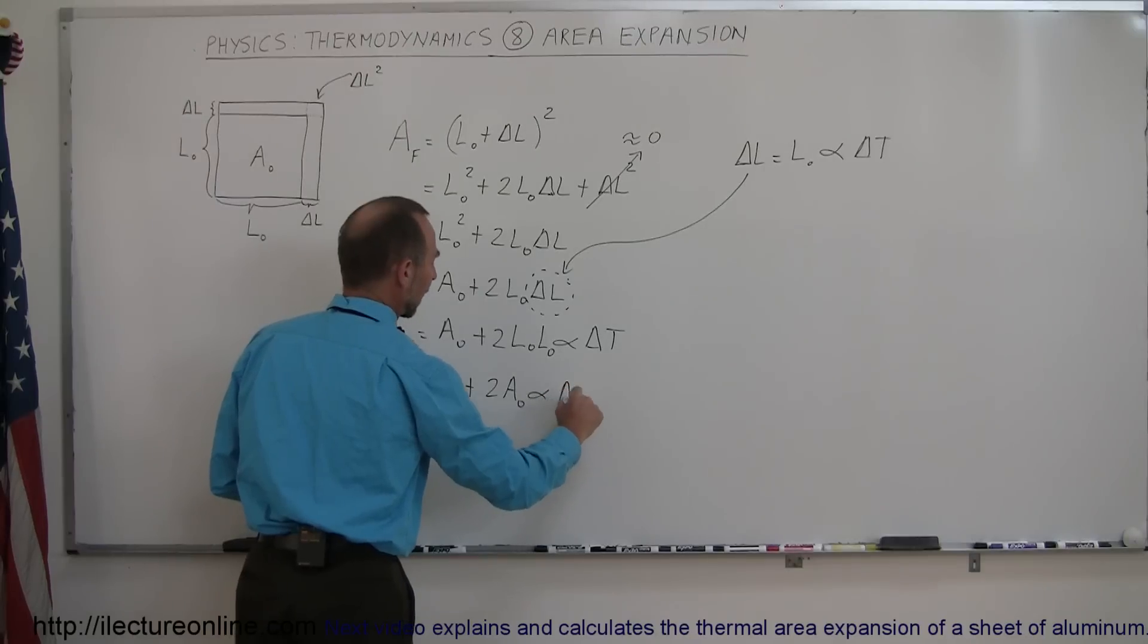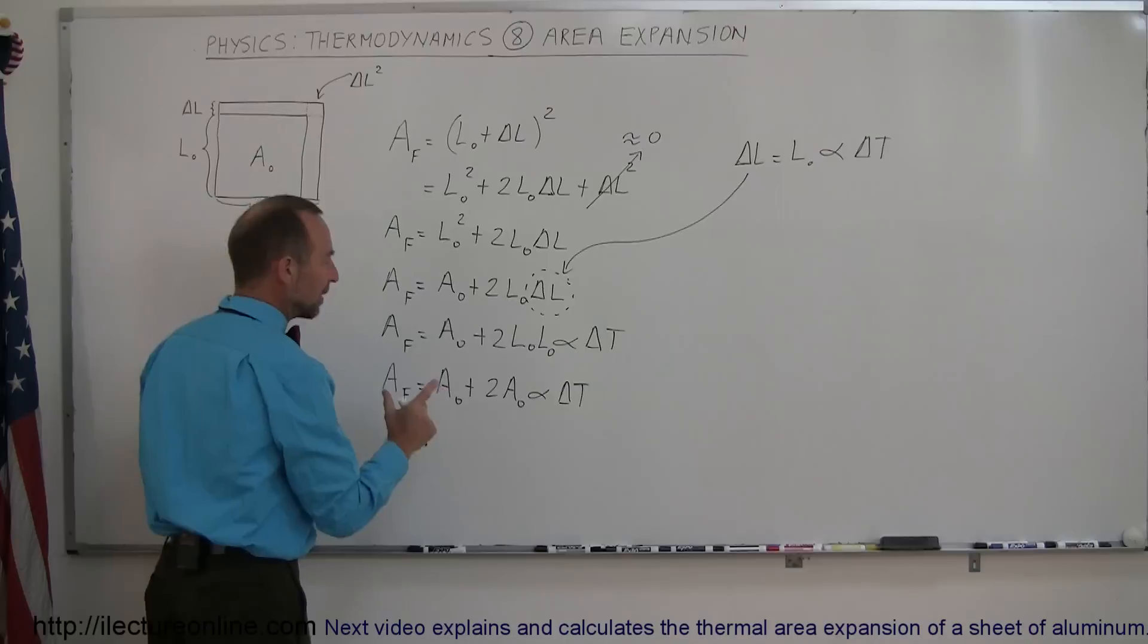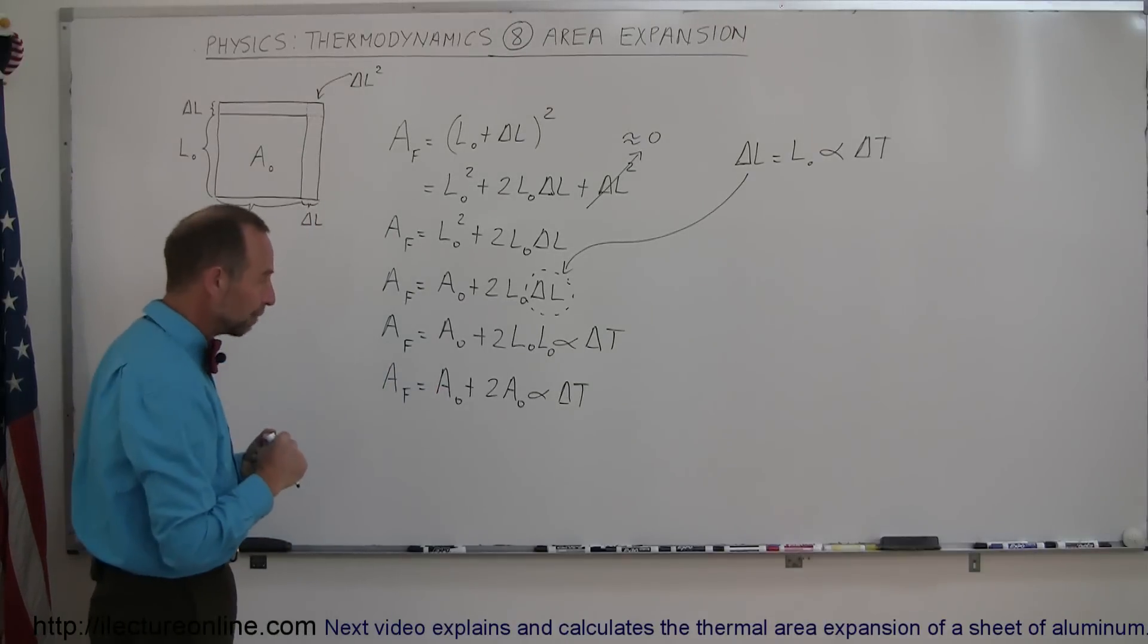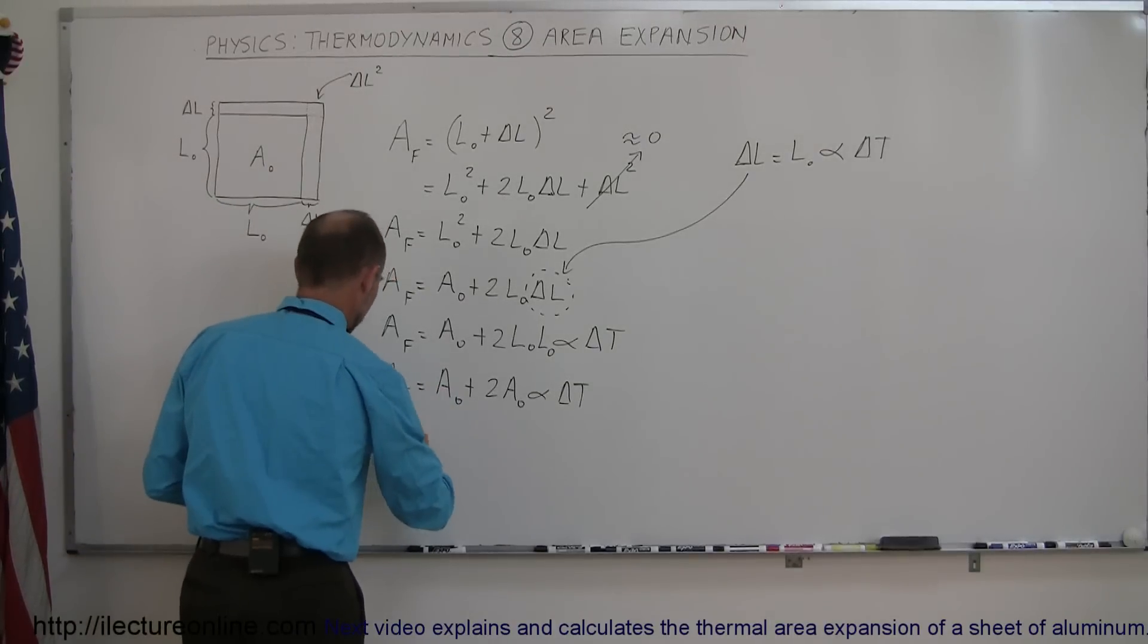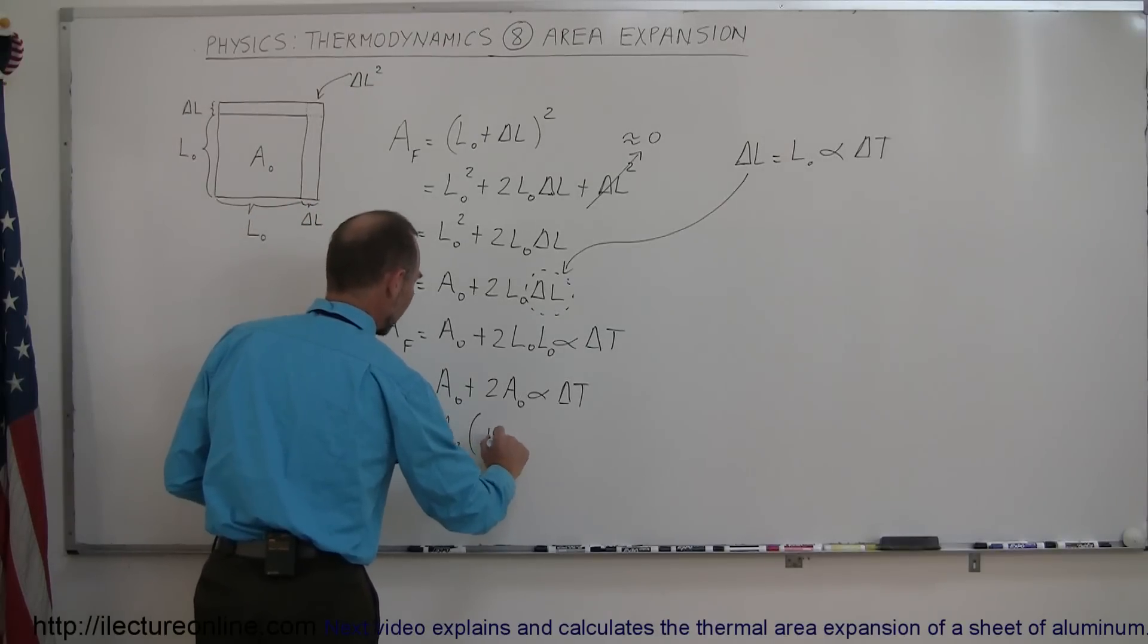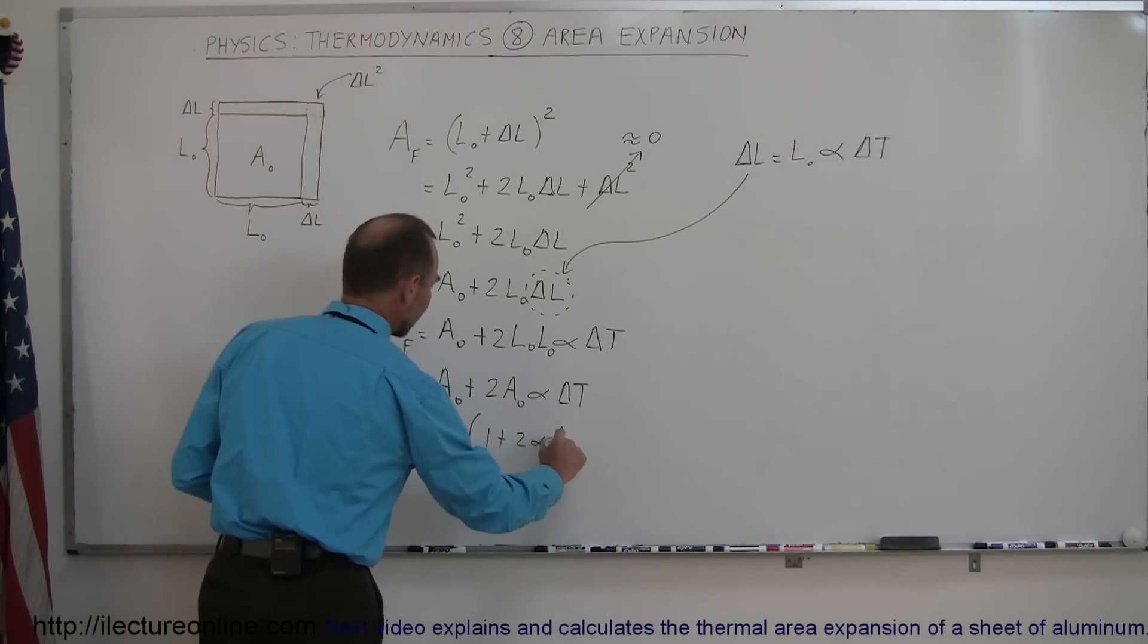If we now factor out the A sub nought, we are left with a one plus two alpha delta T.